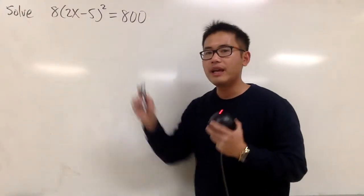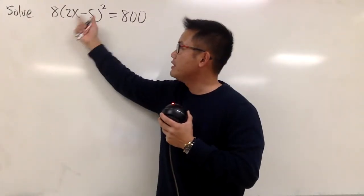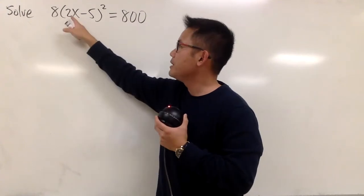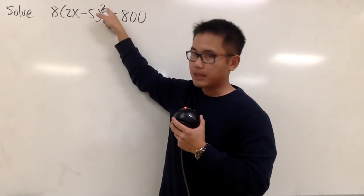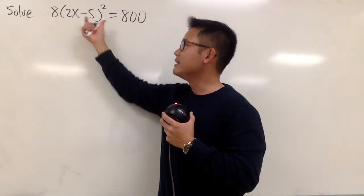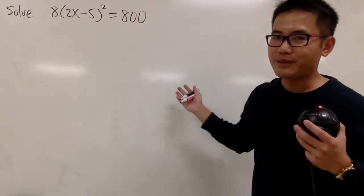Okay, we're going to solve this equation. We see that we have a perfect square right here already. Namely, we have this 2x minus 5 in the parentheses, and then raised to a second power. The x is in the parentheses right here. There's no other x outside.